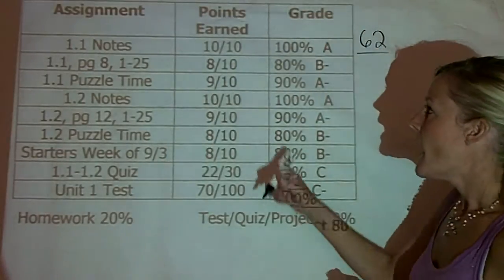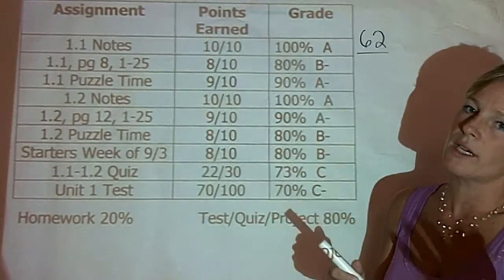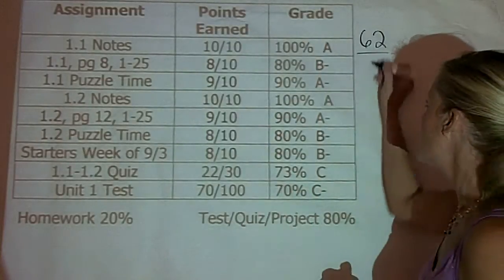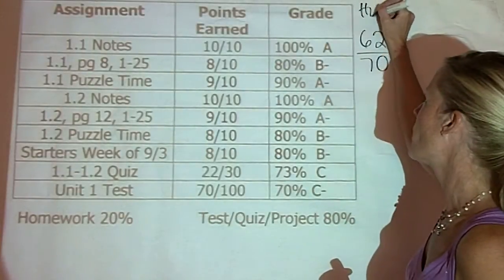So, that's how many points they earned out of 10, 20, 30, 40, 50, 60, 70. So, the numerator, the first number, tells you how many they earned. The denominator tells you out of how many. So, 62 out of 70 is the number of homework points that they earned. This is homework.